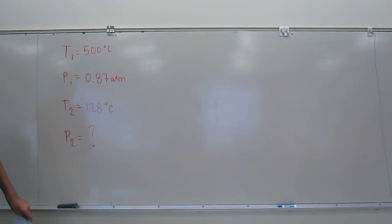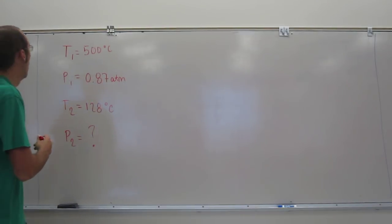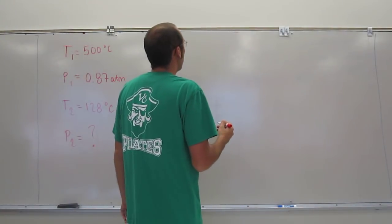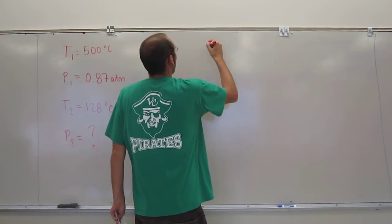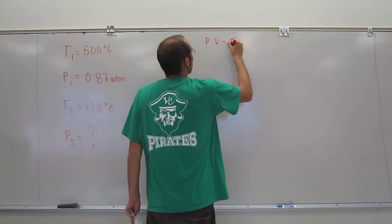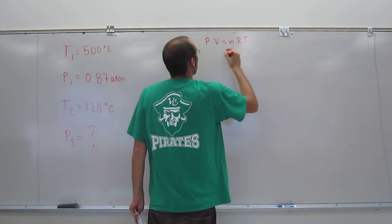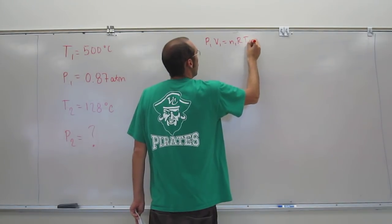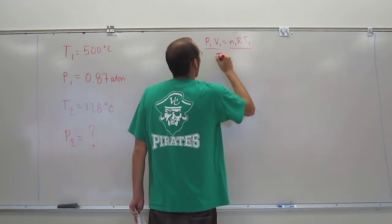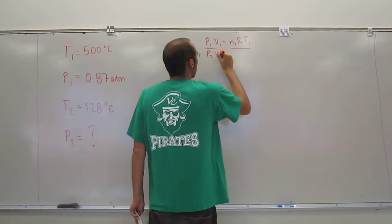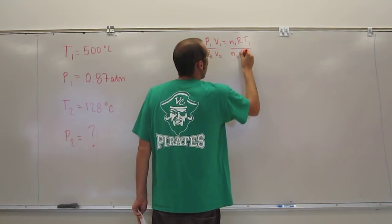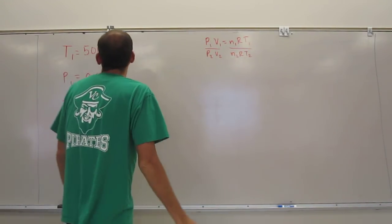And remember, to get this, you don't have to remember all of those laws. You just have to remember the ideal gas law. And that's PV equals nRT. And you just do P1V1 equals nRT1, and then divide it by P2V2 equals nRT2.